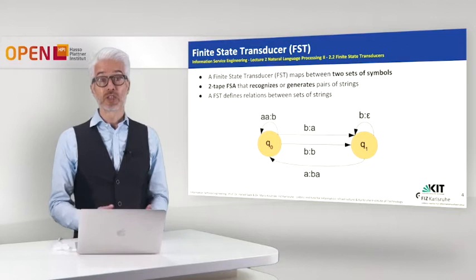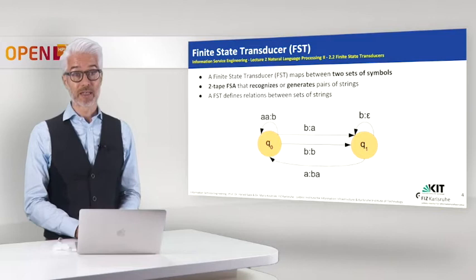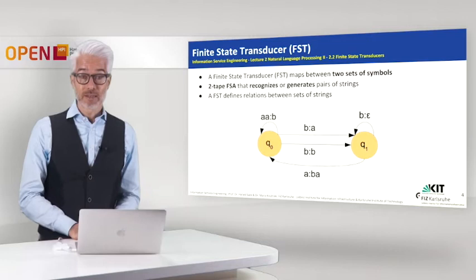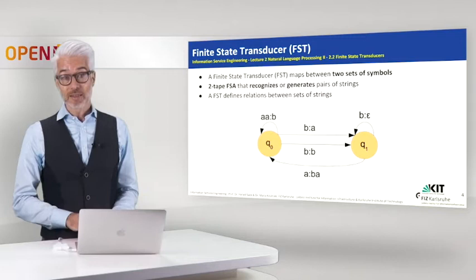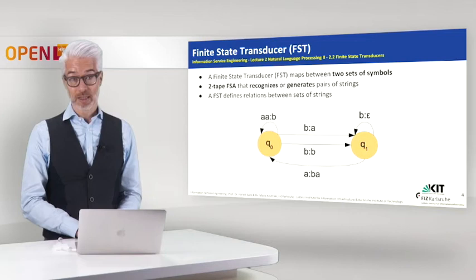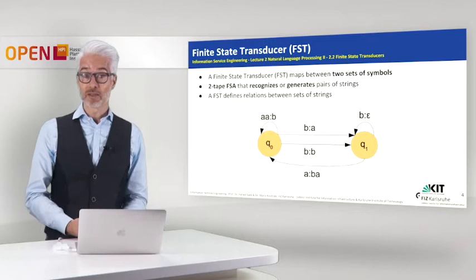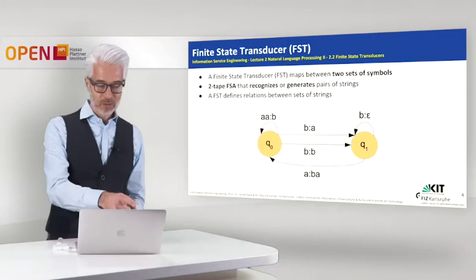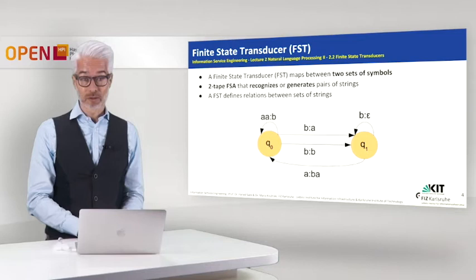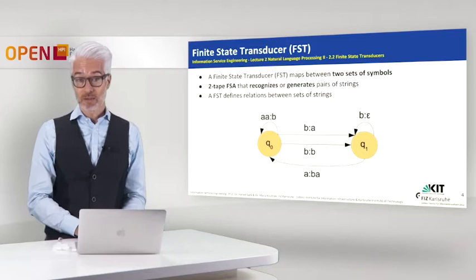We achieve this by extending the model of the finite state automaton to a so-called finite state transducer, FST. The only difference here is that instead of a single input string, this kind of finite state automaton has a two-tape input tape, which means you have two lines of inputs and one of them can also be read as an output. You have two different symbols on each arc and they are separated by a colon — the left one is tape number one, and the right one is tape number two.